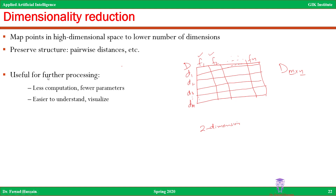This is different from simple feature selection. In feature selection you completely remove the features; in dimensionality reduction you remove the features but take the projection of the data onto the dimensions you are keeping. This is useful for further processing of the data — it takes less computation, requires fewer parameters, and is easier to understand and visualize.